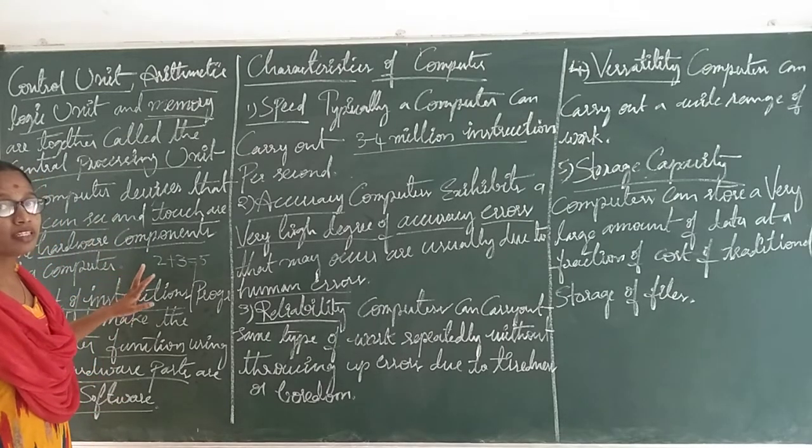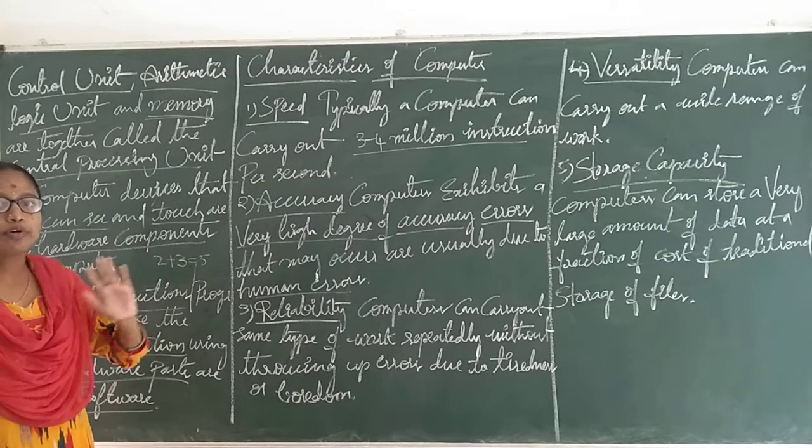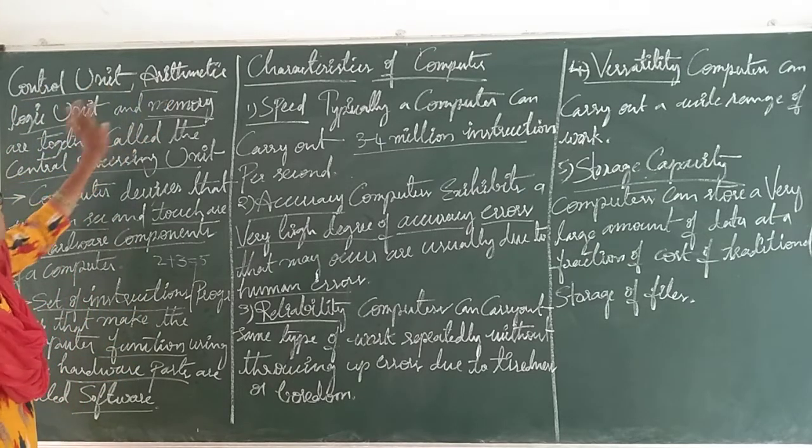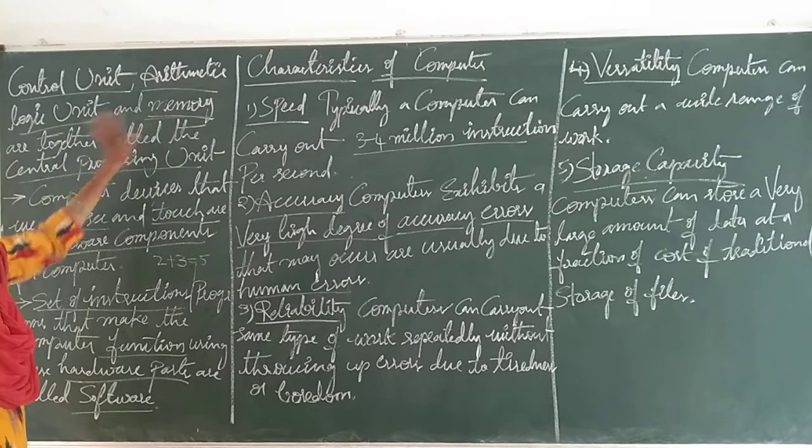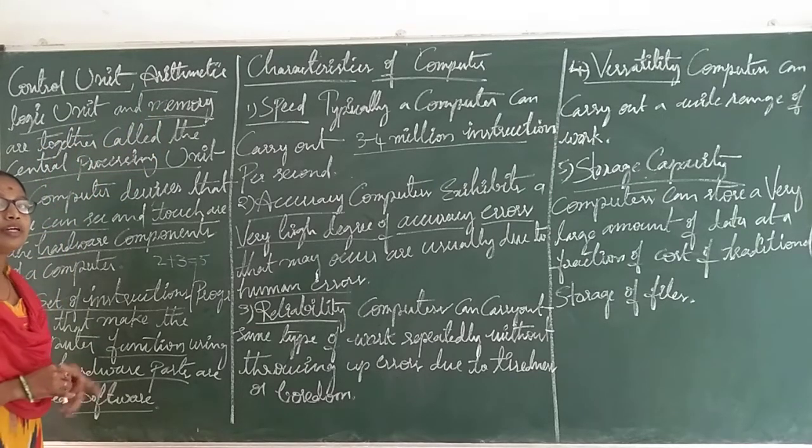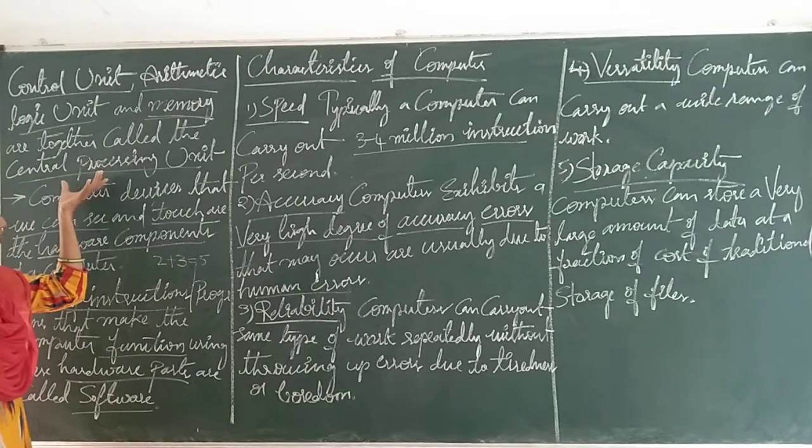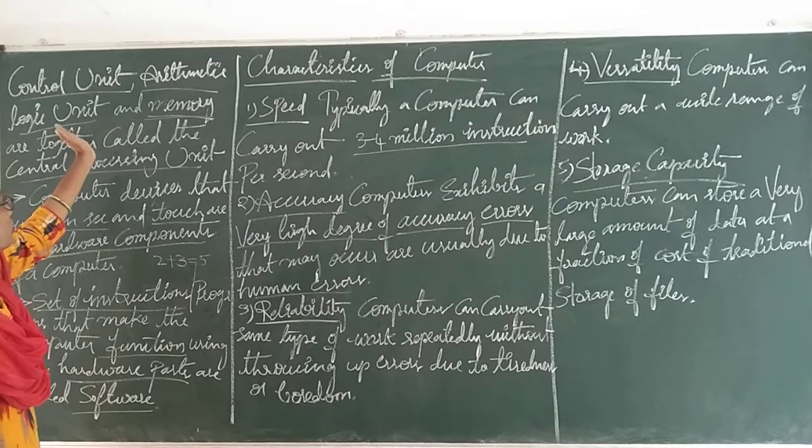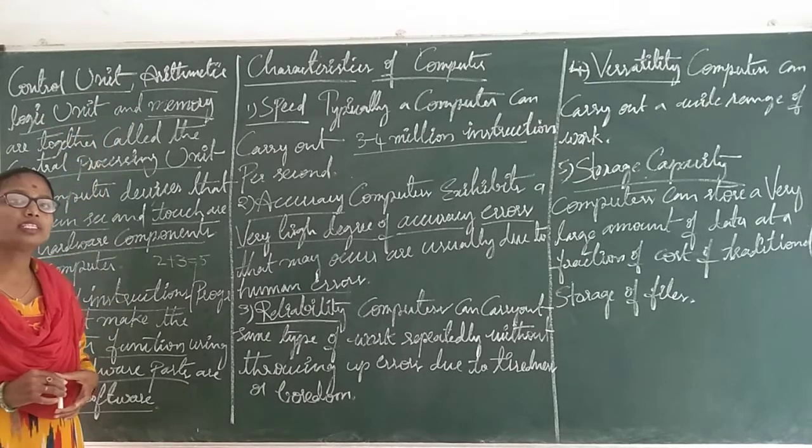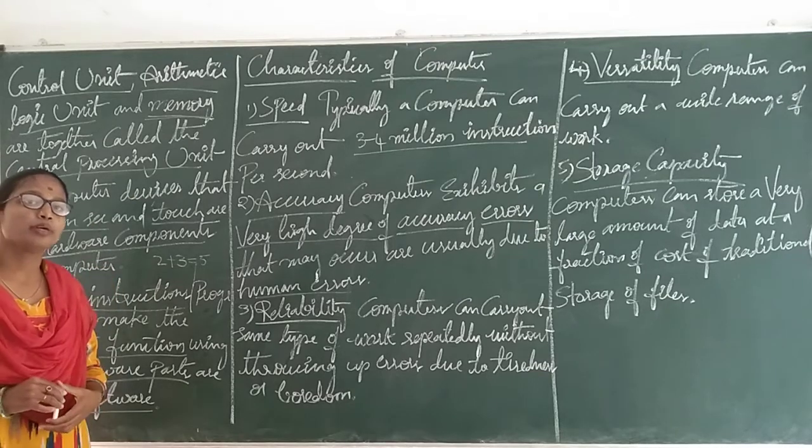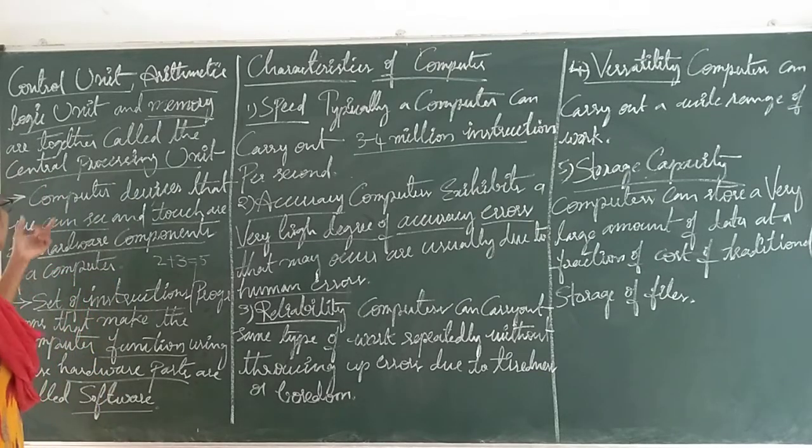Here we have some points of the input process output model. The control unit, arithmetic logic unit, and memory unit all together form the central processing unit. We have categorized these three components under the CPU.